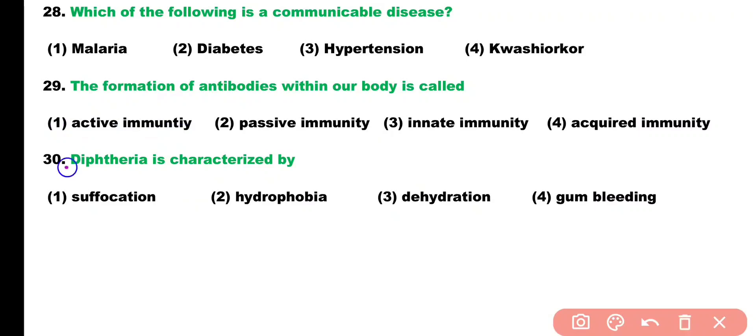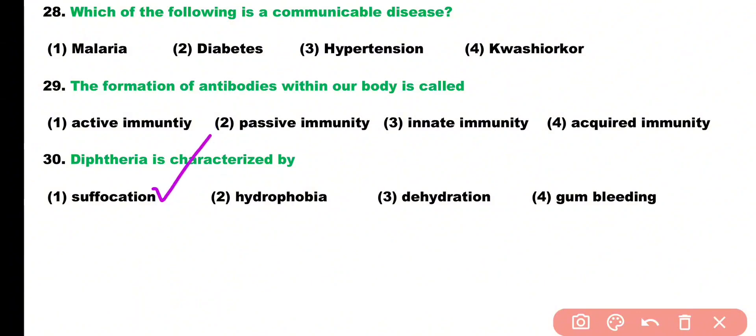Question number thirty: diphtheria is characterized by: suffocation, hydrophobia, dehydration, or gum bleeding. Correct answer is option one — diphtheria is caused by Corynebacterium diphtheriae and its main symptom is suffocation. It is a disease of the respiratory system and can cause death.